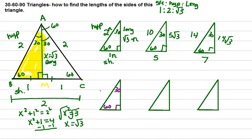Let's say we're not given the shorter leg. Let's say we're given the longer leg, and let's make it four square roots of three.